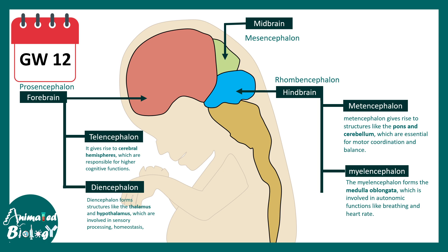This particular stage of formation of these specific regions is known as vesicularization. Basic vesicles are forming in the brain, which would eventually be regionalized into specific brain regions. This summarizes our overall idea about neurulation.